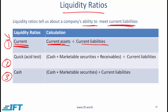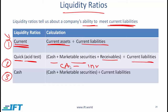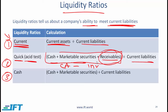You might say that inventory is not too liquid and may not be sold easily. Then you can look at a slightly more conservative ratio: the quick ratio, or acid test. This looks at cash, marketable securities, and receivables divided by current liabilities. If receivables are also not very liquid, you can use the most conservative ratio: cash and marketable securities divided by current liabilities.